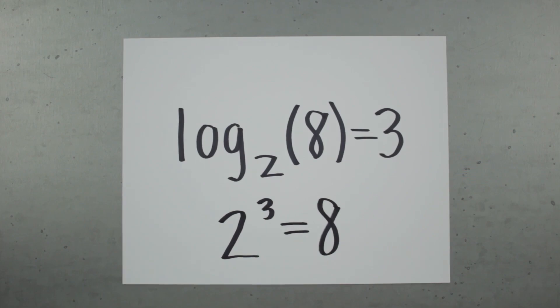So b, the base of the logarithm, is going to turn into a power function. We're going to raise b to the exponent y and get a result of x.